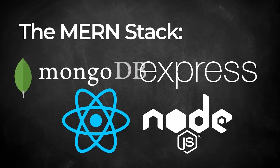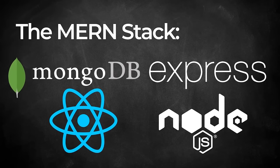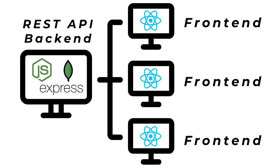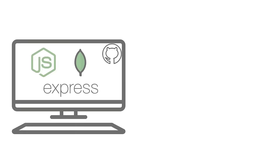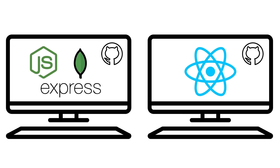MERN is an acronym that uses the first letter of 4 complementary technologies: M is for MongoDB, E is for ExpressJS, R is for React, and N is for NodeJS. So if the MERN stack is fullstack, that leads us to ask what is fullstack and why is the MERN stack considered to be fullstack? A fullstack application means it requires code that runs on the server and code that runs in the browser.